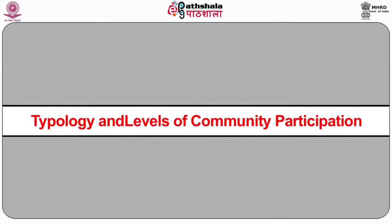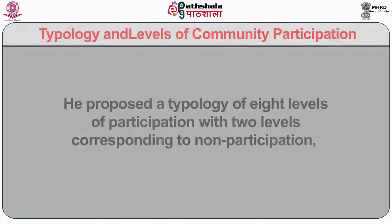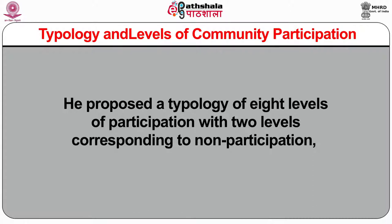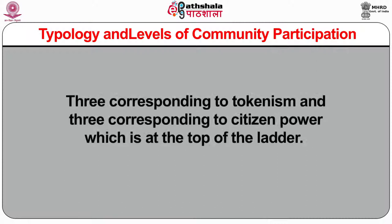Let us now discuss about the typology and levels of community participation. In the year 1969, Sherry Arnstein proposed the Ladder of Citizen Participation, according to which we can assess the level of participation of any community in a region. At the core of this approach was the redistribution of power for have-not citizens. She proposed a typology of eight levels of participation with two levels corresponding to non-participation, three corresponding to tokenism and three corresponding to citizen power, which is at the top of the ladder.